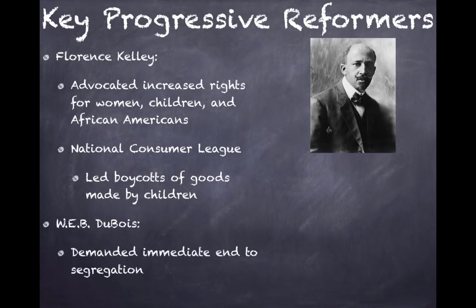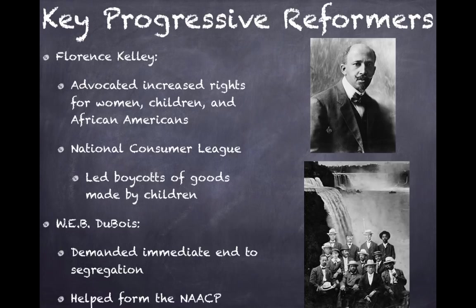W.E.B. Du Bois demanded an immediate end to segregation and wanted full equality for African Americans. He helped form the Niagara Movement, formed in Niagara Falls, Canada. That helped morph into the NAACP, a civil rights organization still around today, which will play a very instrumental role in the civil rights movement in the 1950s.